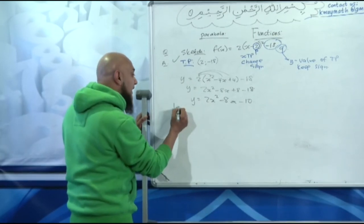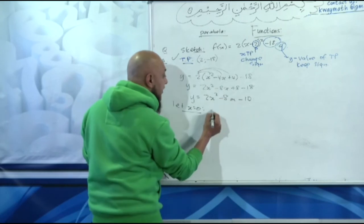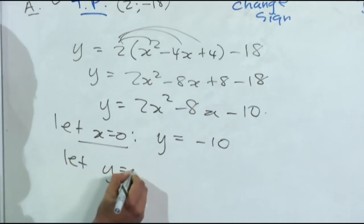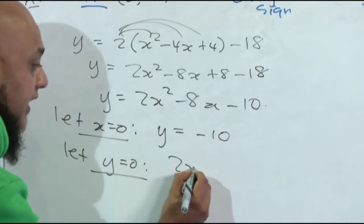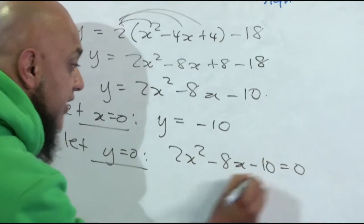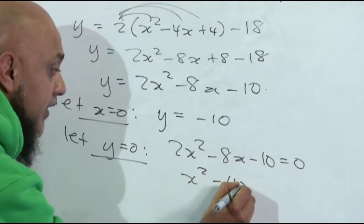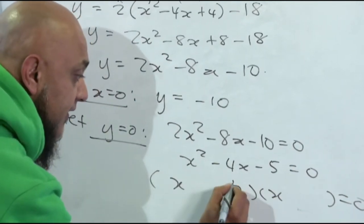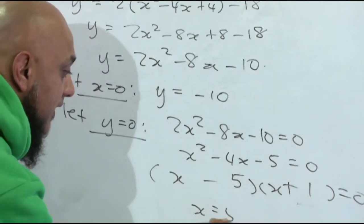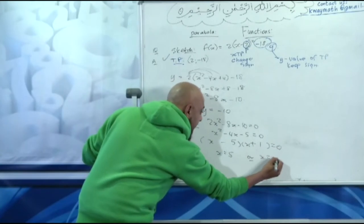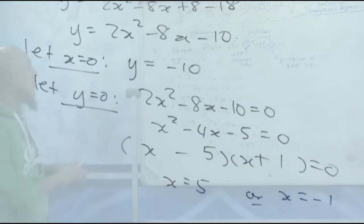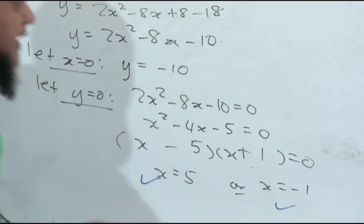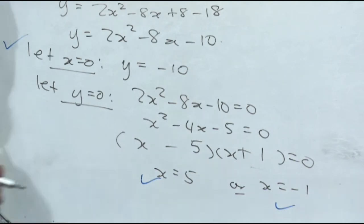Now let x = 0: y = −10, so the y-intercept is −10. Then let y = 0: 2x² − 8x − 10 = 0. Divide by 2: x² − 4x − 5 = 0. Factorize: (x − 5)(x + 1) = 0, so x = 5 or x = −1. We now have our turning point, y-intercept, and two x-intercepts.